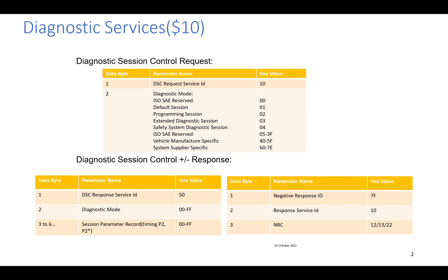0x04 is the safety system diagnostic session, used to test safety-critical diagnostic functions such as airbag test or seat belt test. There are also vehicle manufacturer-specific sessions with IDs 0x40 to 0x5F, and system supplier-specific sessions with IDs 0x60 to 0x70. There is also an ISO reserved range from 0x05 to 0x3F.